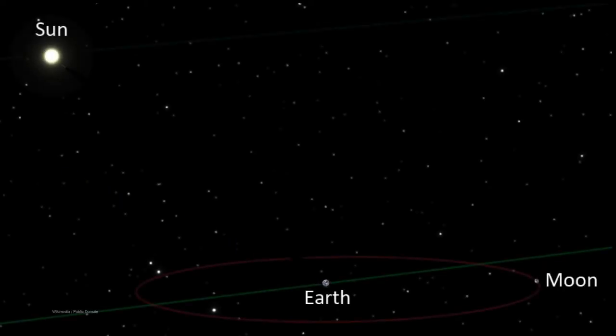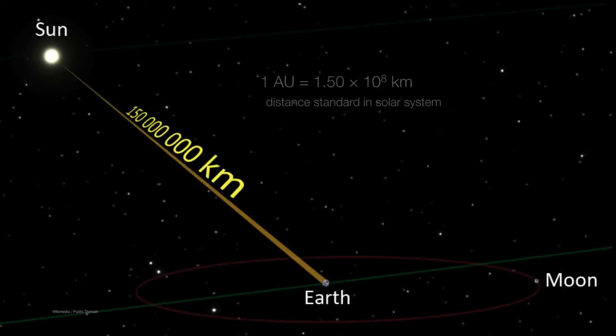So let's zoom out even farther. The distance from the Earth to the Sun is about 150 million kilometers. So that takes us to 1.5 times 10 to the 8th kilometers. We haven't gone one order of magnitude — we've gone three orders of magnitude.